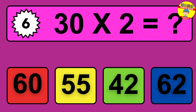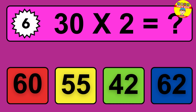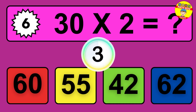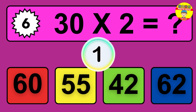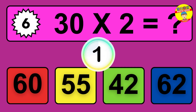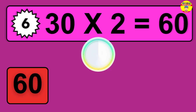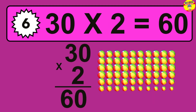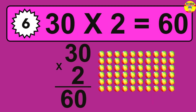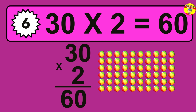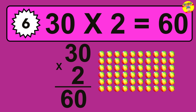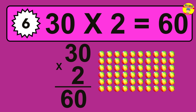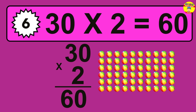Question six: 30 times 2 equals what? The answer is 30 times 2 is 60. To calculate, we have 30 groups with 2 balls each. So how many balls do we have? 60 balls.